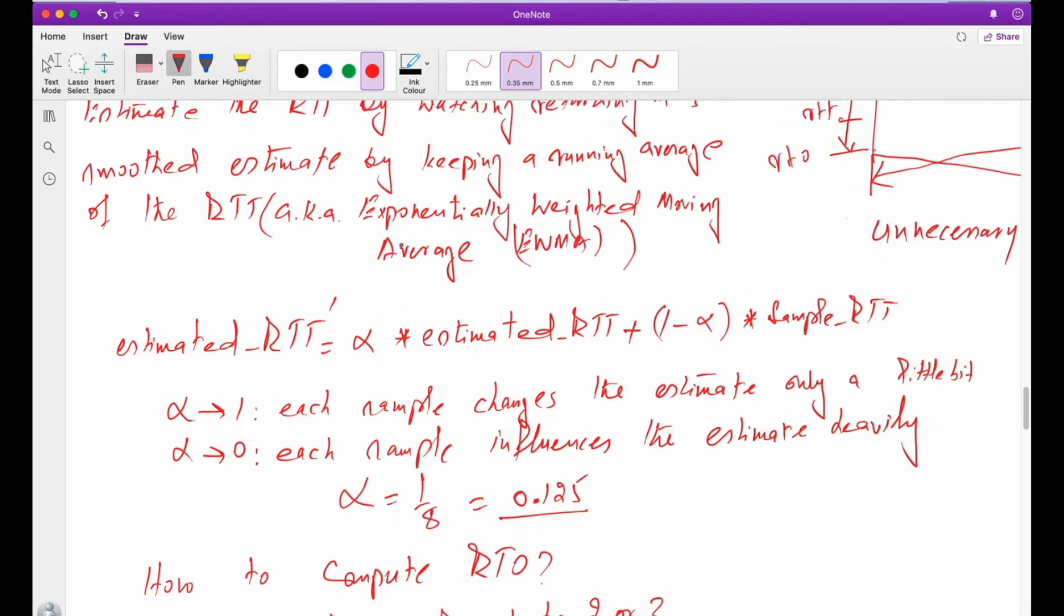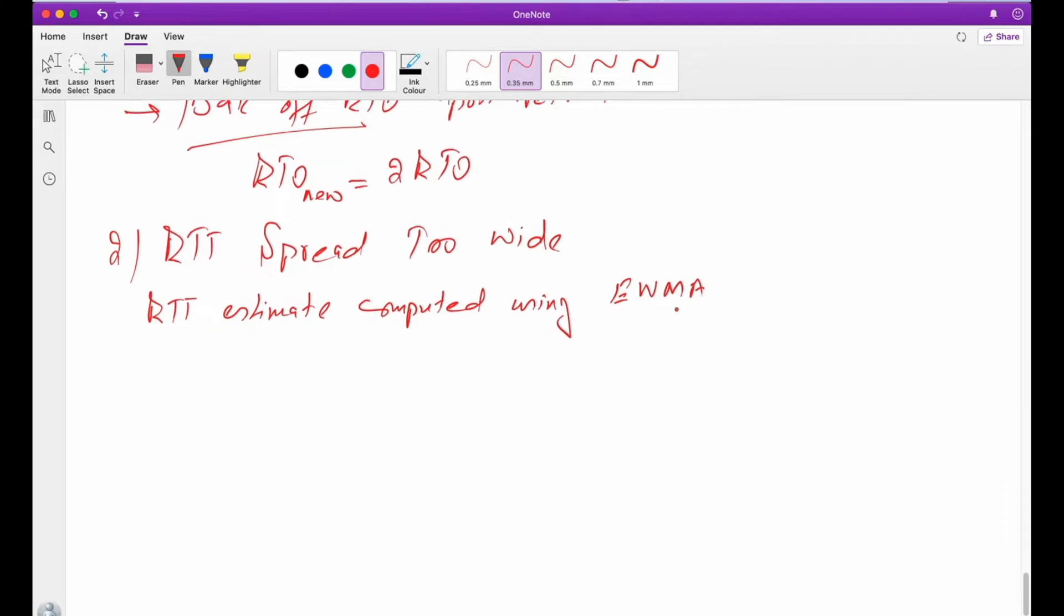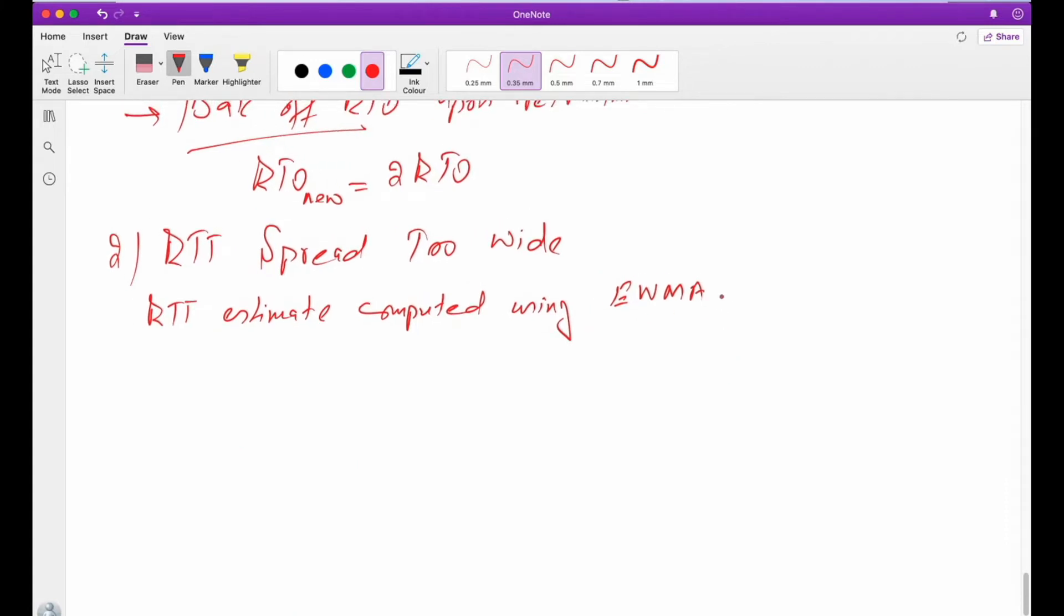This is based on exponentially weighted moving average. So that's why it only considers the mean. And here is the problem, right?